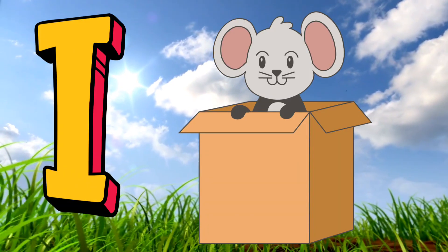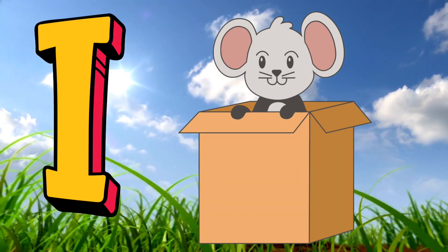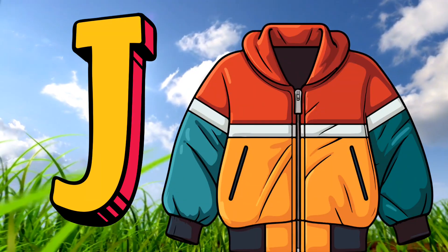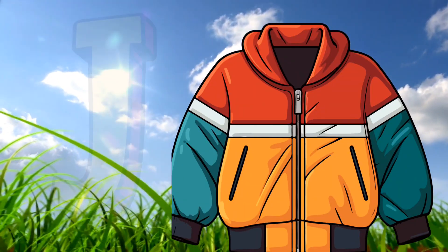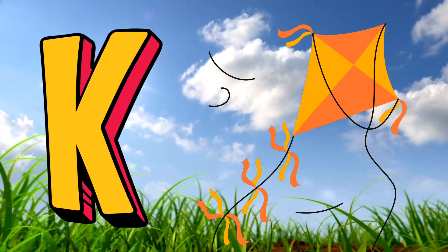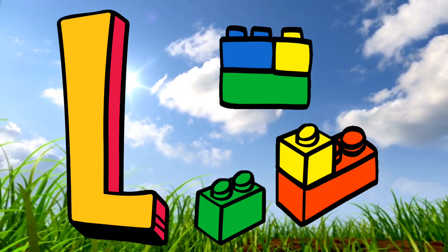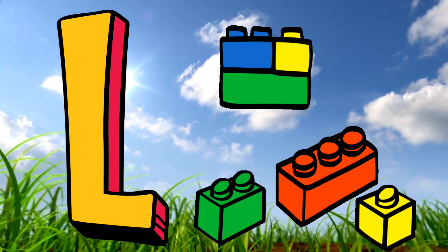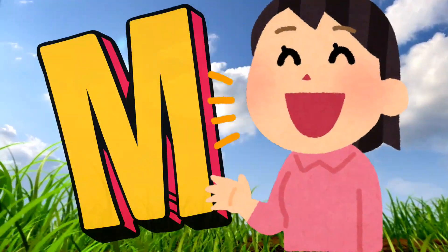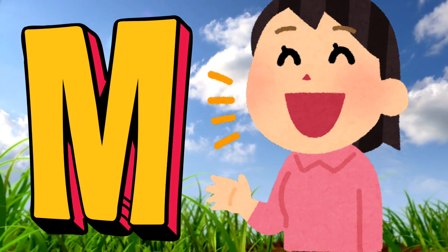I is for inside, i-i-inside. J is for jacket, j-j-jacket. K is for kite, k-k-kite. L is for lego, la-la-lego. M is for mouth, m-m-mouth.